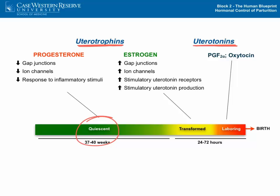Estrogen will increase gap junctions between myometrial cells and ion channels, so that the myometrial cells become more excitable. It will also increase the receptors for uterotonins that cause contractions and stimulate uterotonin production in some cell types.